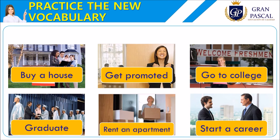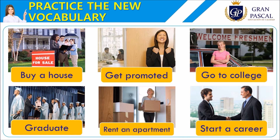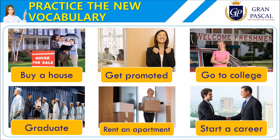Now let's practice. Here you have the set of pictures that were previously shown, and what you have to do is practice the pronunciation. You have the labels here — ya tienen las etiquetas. The first one: buy a house, get promoted, go to college, graduate, rent an apartment — rentar un apartamento.